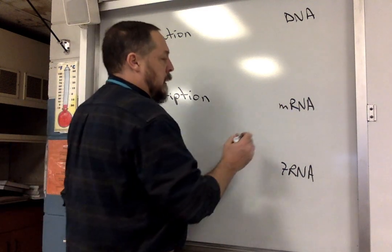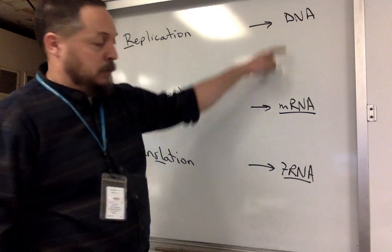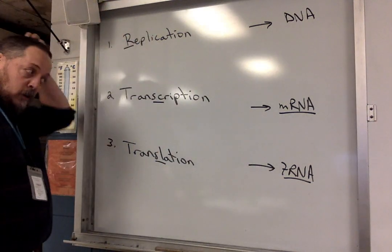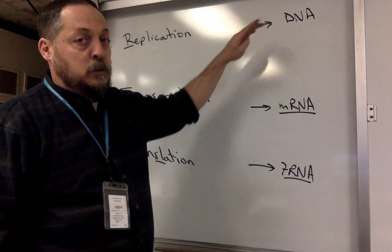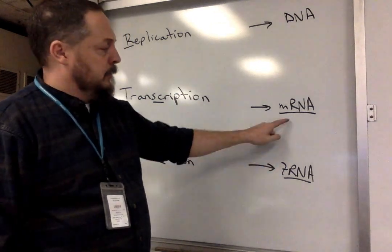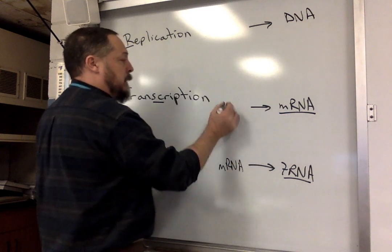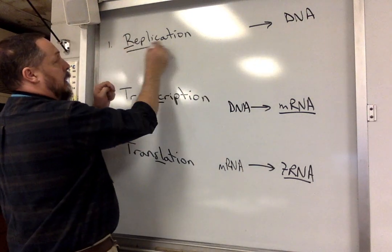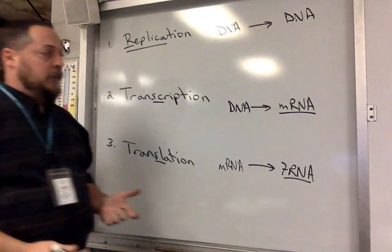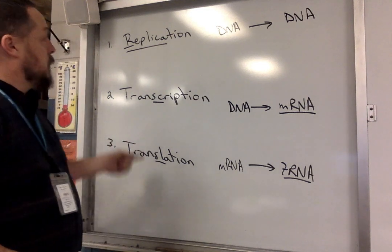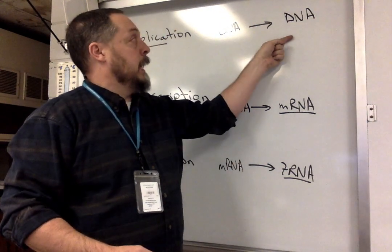Now how do we get each nucleic acid? In alphabetical order, each one comes from the one above it — except for the first. tRNA comes from mRNA, mRNA comes from DNA, and DNA is a replica, meaning exactly the same, so DNA comes from DNA. Those are the tricks: alphabetical order, and each comes from the one before it, except DNA which comes from itself because it's a replica.